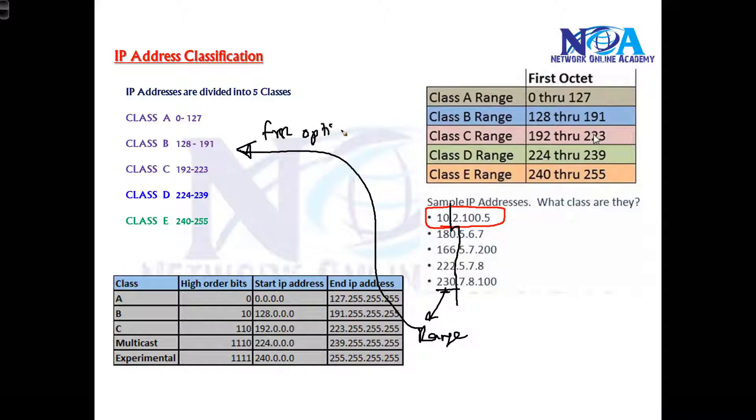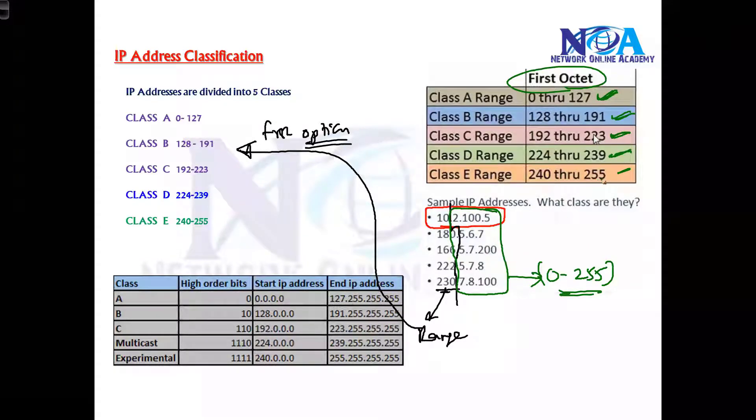Only see the first portion, don't see the second, third, fourth, because the second, third, fourth portions can be anything from 0 to 255. So the classes are not based on the second, third, or fourth octet. If the first octet is in the range of 0 to 127, then we call it A class. If the first octet is in the range of 128 to 191, B class. Similarly, first octet C class, D class, as well as E class.